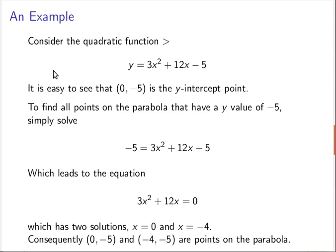If y equals 3x squared plus 12x minus 5, then immediately we know this is an opening up parabola because the a value is positive. We know that 0, -5 is the point where the y-intercept is, and we can ask the question: are there any other times when the y value is negative 5?